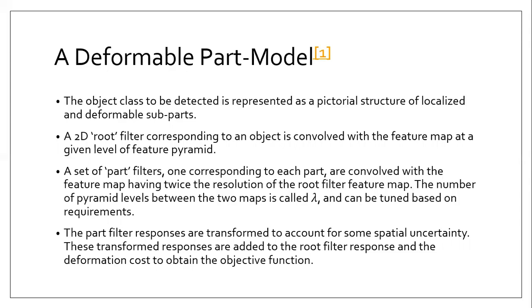A deformable part model represents the object class to be detected as a pictorial structure of localized and deformable subparts. For example, if the object class is person, it is represented by subparts like limbs, head, etc. Two types of filters are used to obtain scores: root filters and part filters. Root filters approximately cover an entire object and are defined by the detection window. The higher-resolution part filters cover smaller parts of the object and are placed lambda levels down in the feature pyramid from where root filters are applied, so that features at that level are computed at twice the resolution of the root level. This helps in capturing finer resolution features localized to greater accuracy.